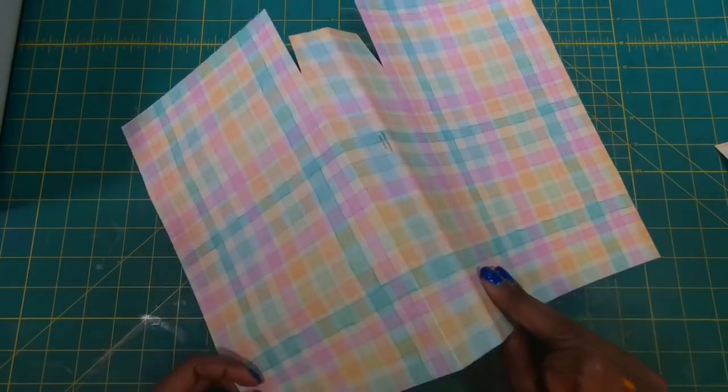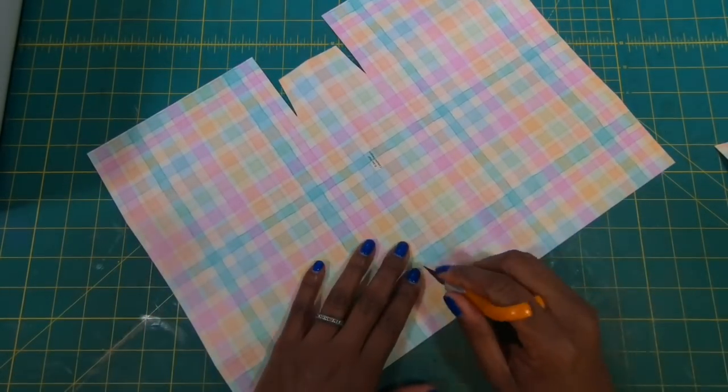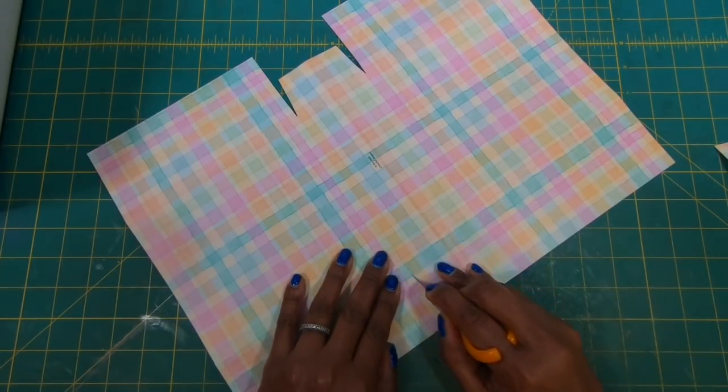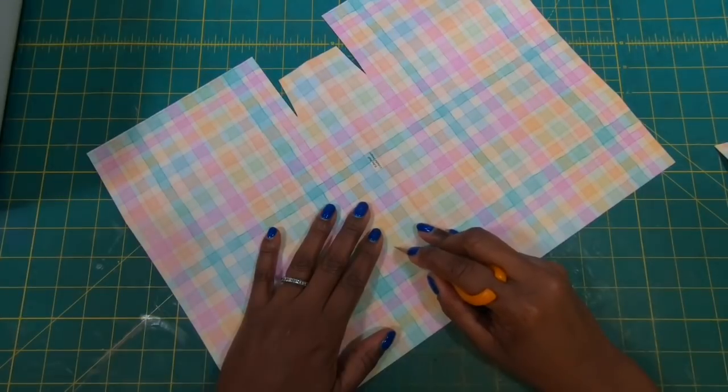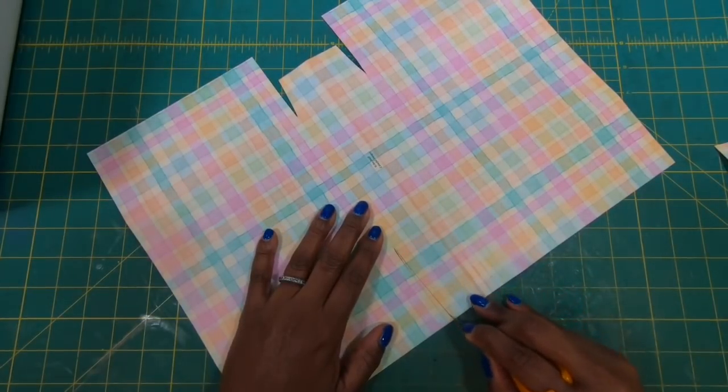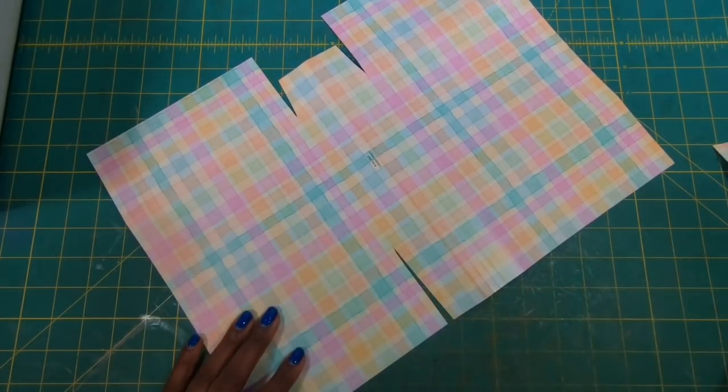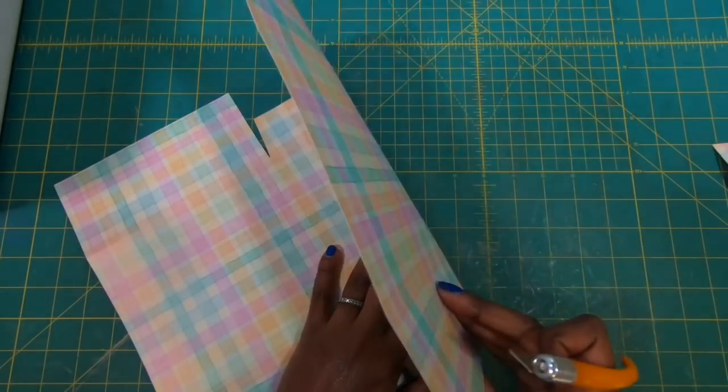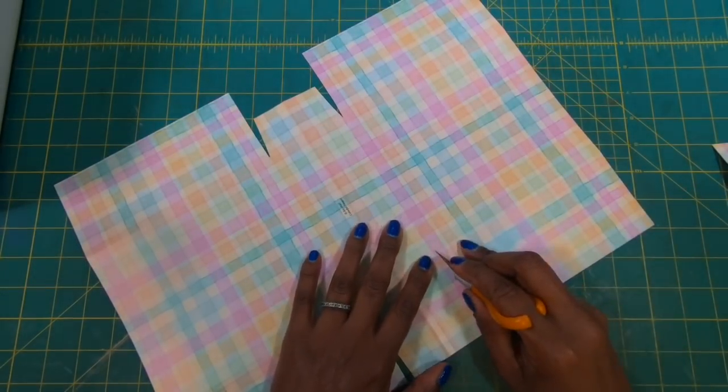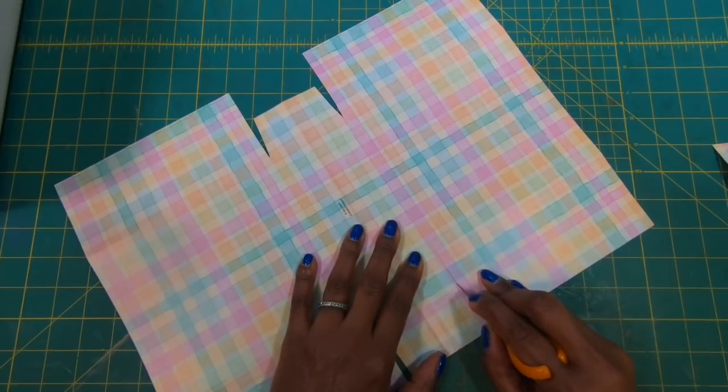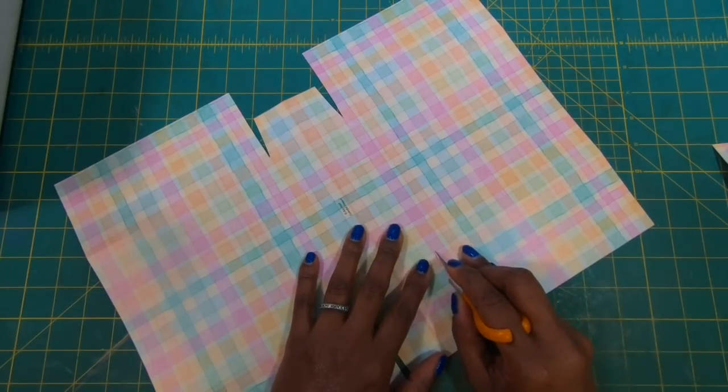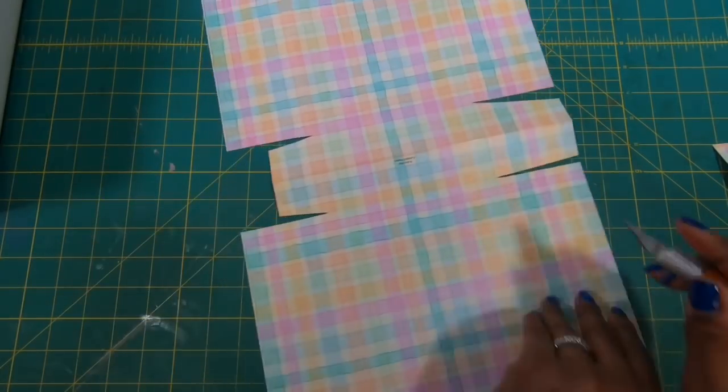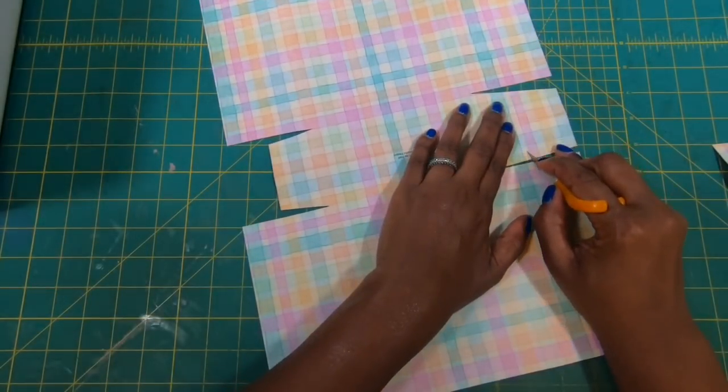I'll rotate it over to the other side and I am going to repeat the process. So I'll go up to the score mark, drag down, and then I'll cut in at an angle. I'll come over to this score mark. I'm going to drag down, cut in, and then trim away some of this.